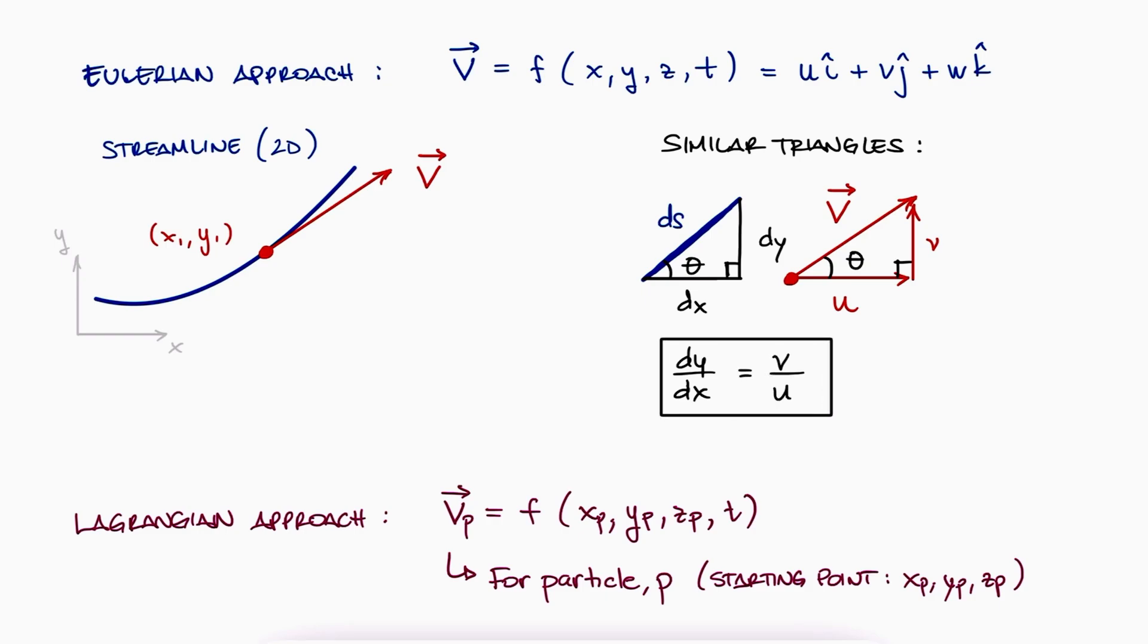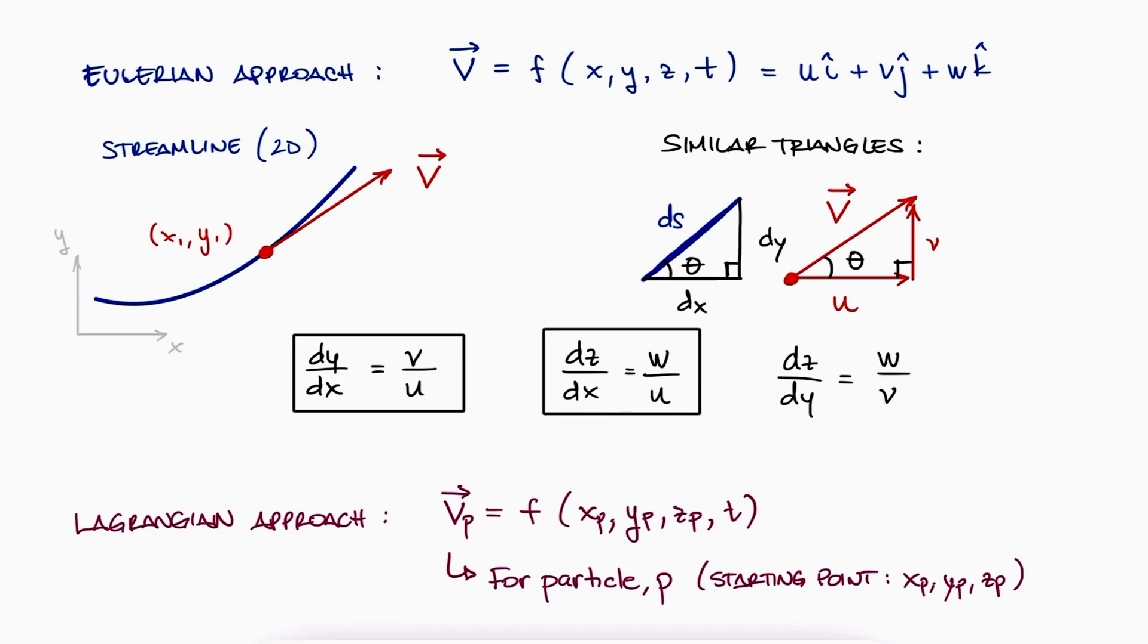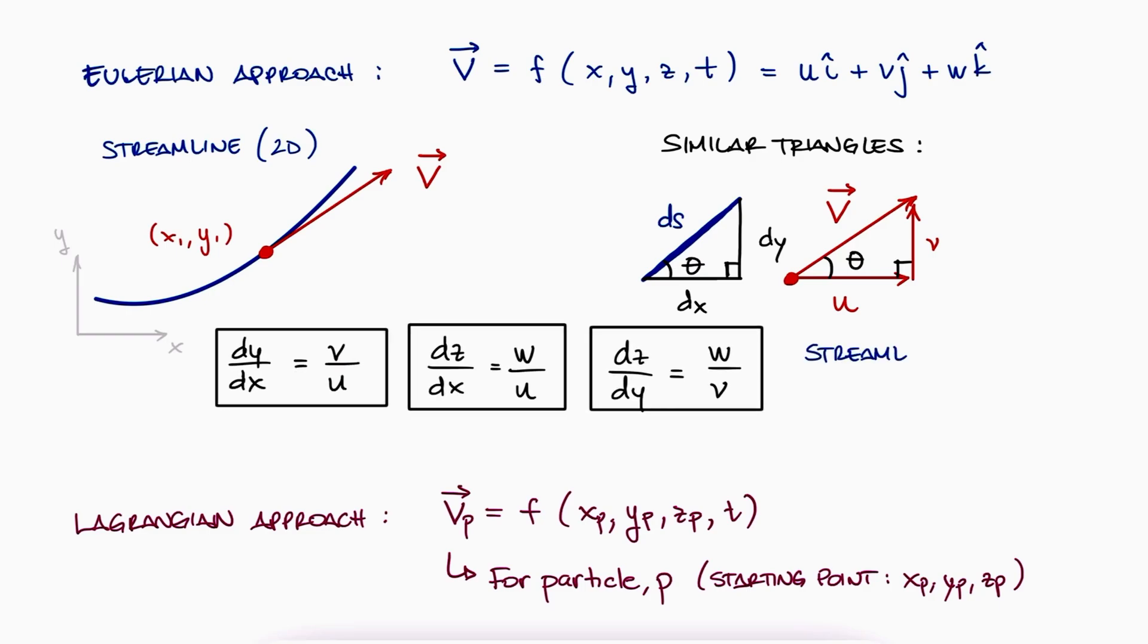This differential equation is the equation of a streamline for 2D. If we do this for the other two pairs of dimensions, we would get dz/dx equal to w over u and dz/dy equal to w over v. These are the equations that effectively describe the flow of a streamline.